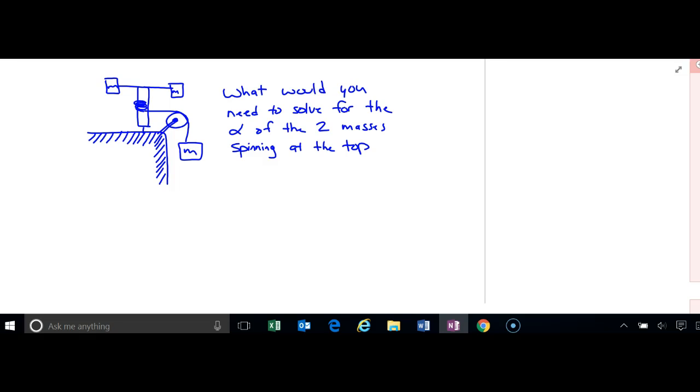Alright, our last problem before you jump into your problems is in this one, what would you need to solve for the alpha of the two masses at the top? So what you have here is you have a pulley with a mass being dropped. That string, which I can see here is wrapped around, starts to spin, and these two objects will rotate in a circle. So what causes them to rotate? Well, that has to be a torque. Well, what's causing this thing to rotate? Well, that is that tension force.